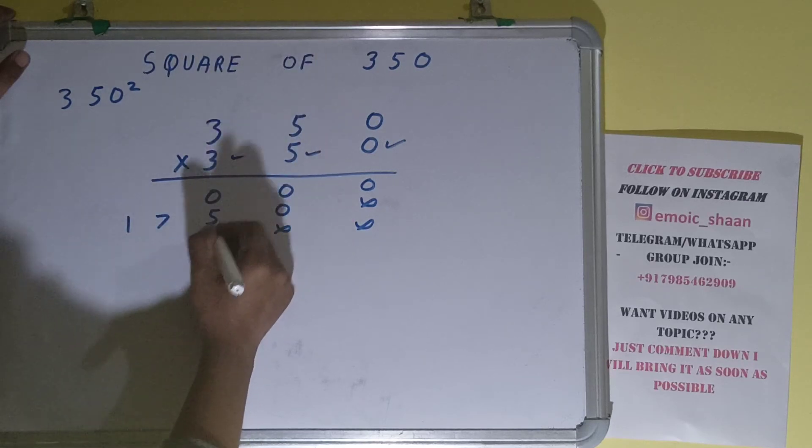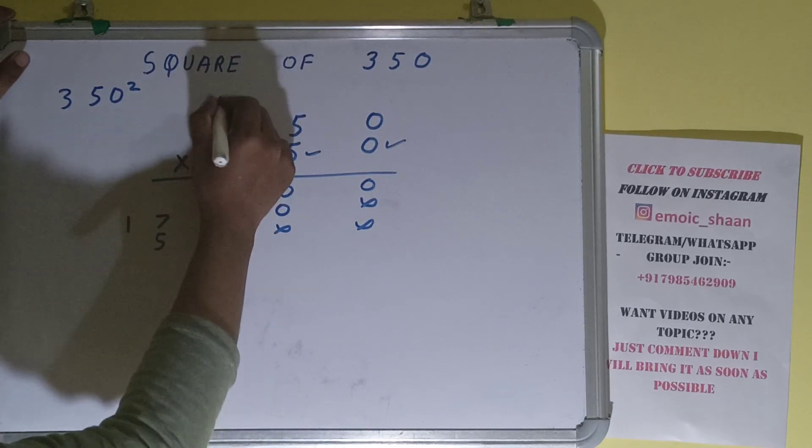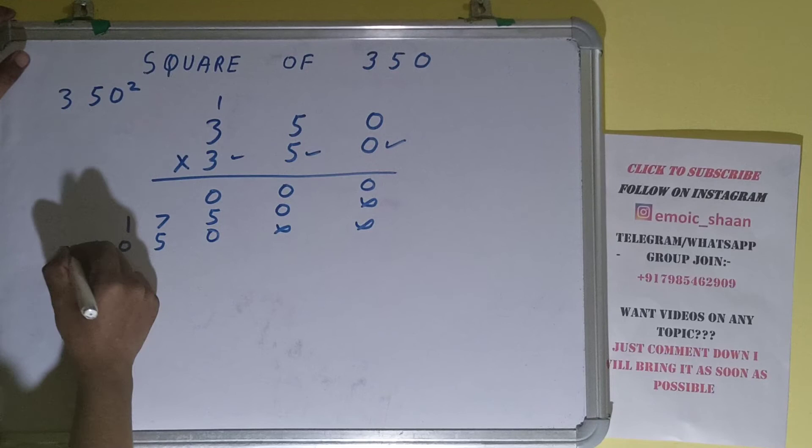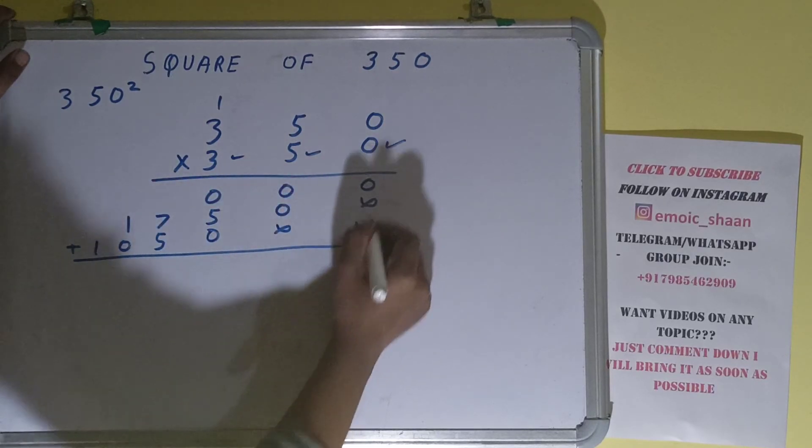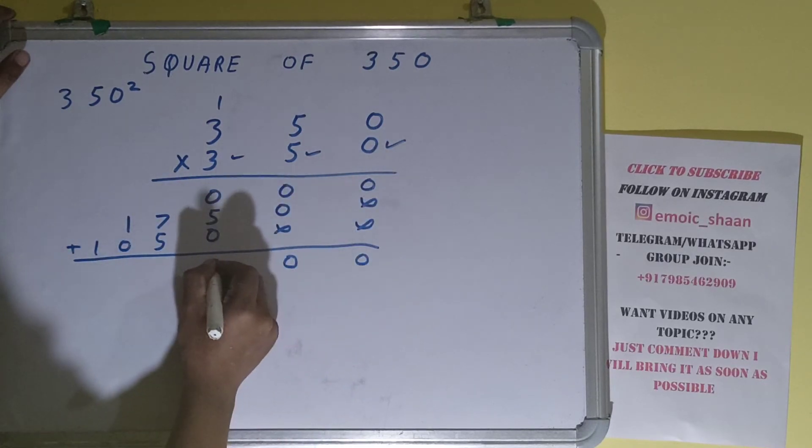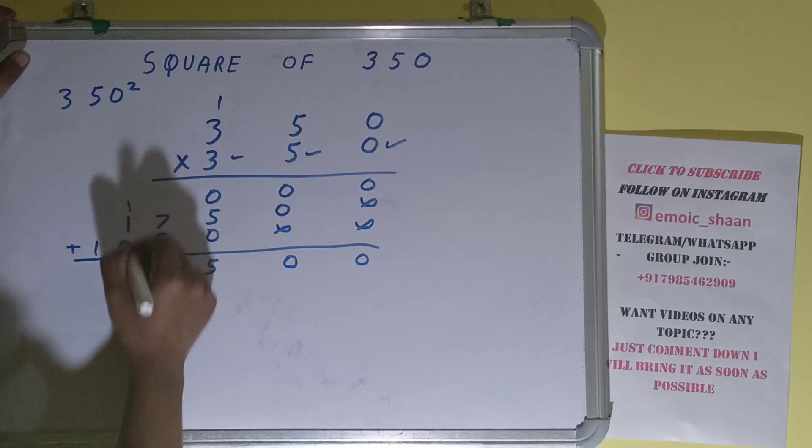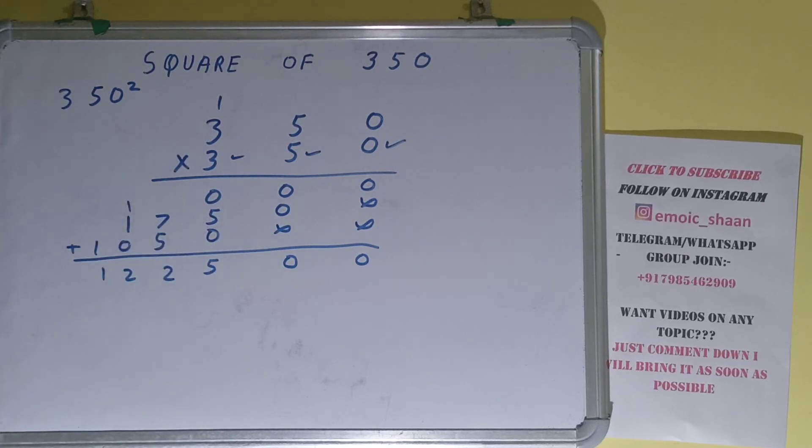Now this 3: 3 times 0 is 0, 3 times 5 is 15, 1 carry, 3 times 3 is 9 plus 1 is 10. Just add everything: 0, 0, 5, 2, 2, 1. So the answer will be 122,500.